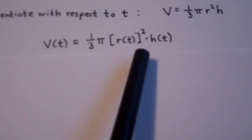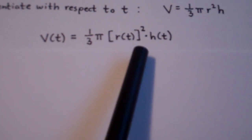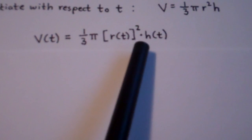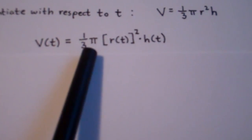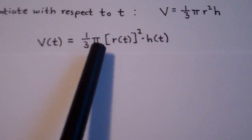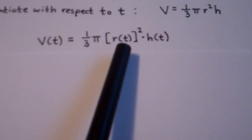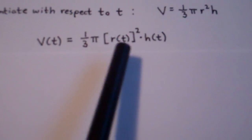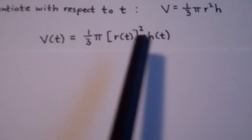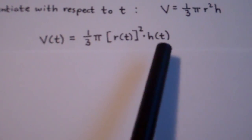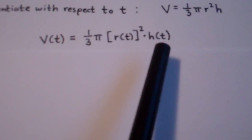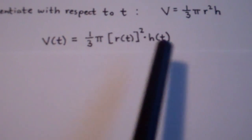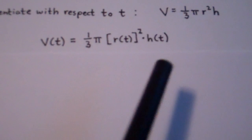And once again, notice on the right side I'm going to be using the product rule. I have 1/3 π r(t)² as my first function, and h(t) is the second function. So I need the product rule here.